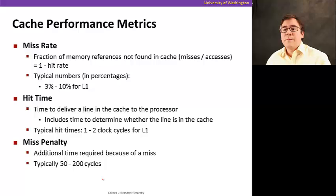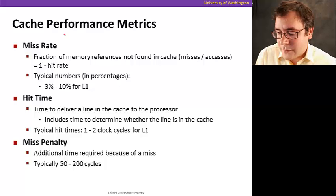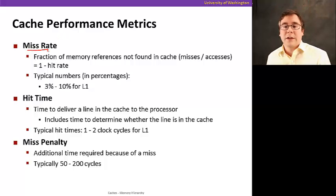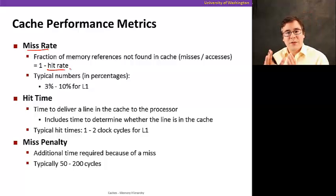So now, let's just look at the basic concepts of cache performance metrics. The first one is called the miss rate. The miss rate is the fraction of memory references that are not found in the cache. That's 1 minus the hit rate. So the hit rate is the percentage of accesses that hit in the cache. So 1 minus the hit rate is what we call the miss rate, which is the fraction of accesses that do not hit in the cache.